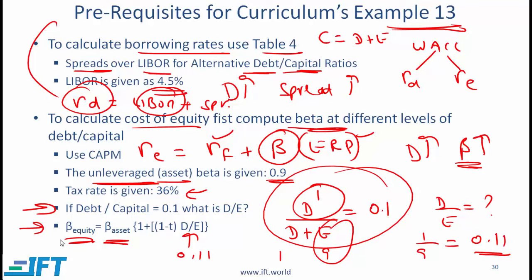You can then calculate the equity beta, plug it into CAPM, and calculate the cost of equity. For each higher level of debt, use the same method to compute the new cost of equity. Hopefully now when you do Example 13 it will make a lot more sense.